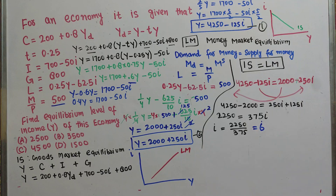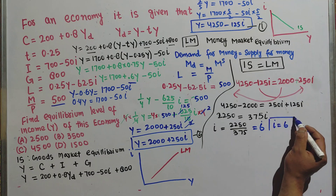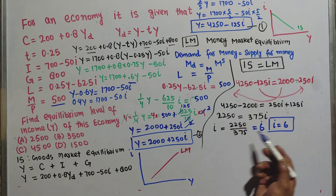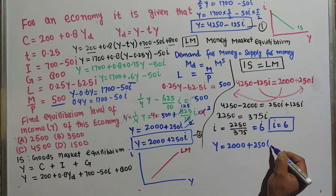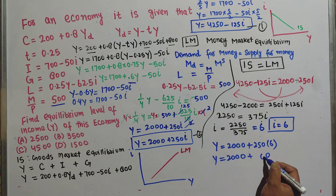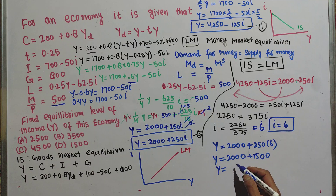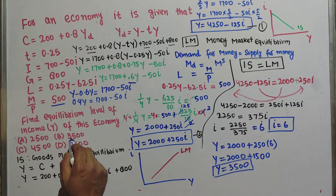Since we need the equilibrium level of income, we plug i = 6 into the LM equation: Y = 2000 + 250 × 6 = 2000 + 1500 = 3500. The equilibrium level of income in this economy is Y = 3500, which matches option B — the correct answer.